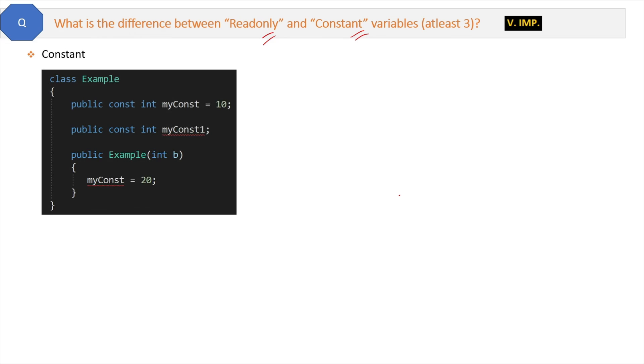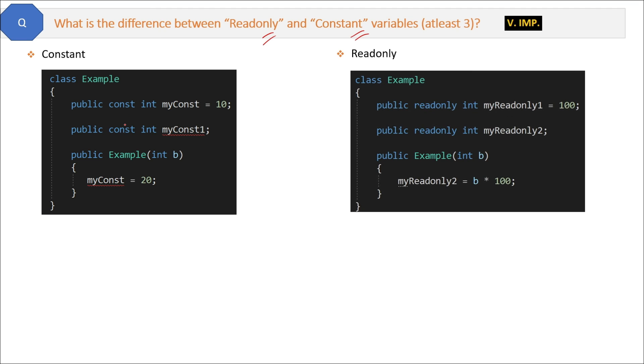Here is the code where we have the const keyword for constant, and here is the code with readonly keywords. Now let's compare them. By using readonly fields, we can assign values in declaration as well as in the constructor part. You can see here we have assigned the value of the myReadonly1 variable as 100, and then for myReadonly2 we just declared and then we are assigning this value inside the constructor part.